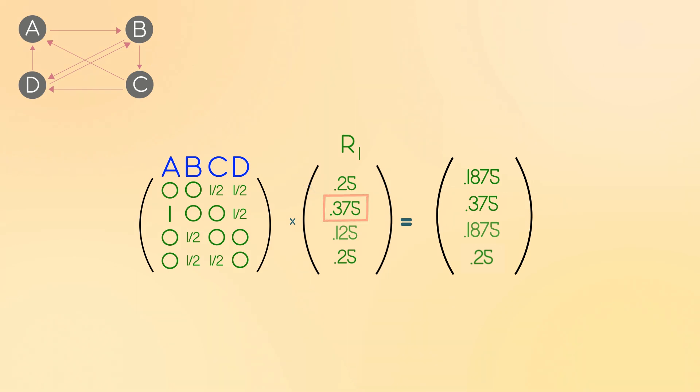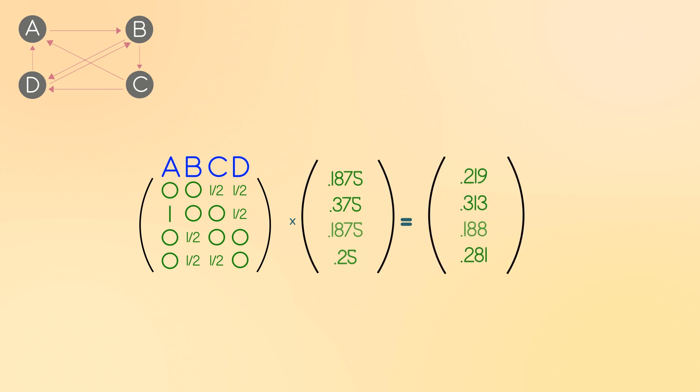Then we just repeat, taking these new probabilities or ranks and find what they'll be after a third click, where the numbers finally start to separate a bit. After many, many multiplications, aka a lot of clicks, the probabilities will converge to these values here, and these are the ranks of each site.